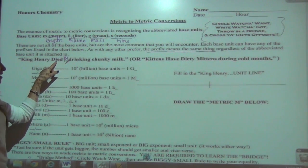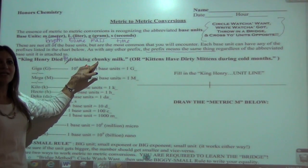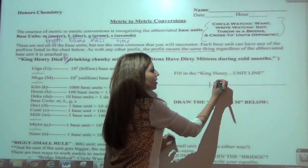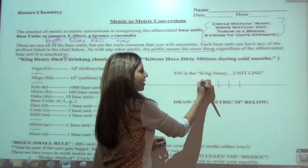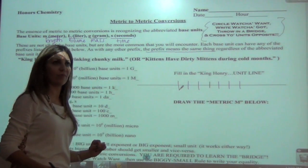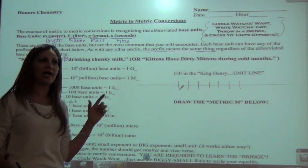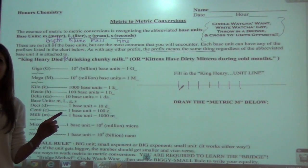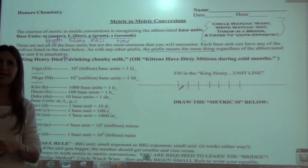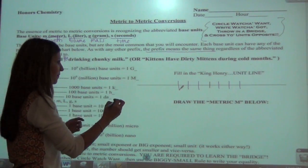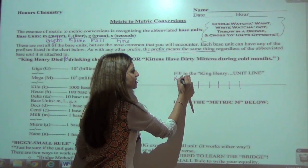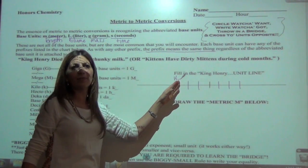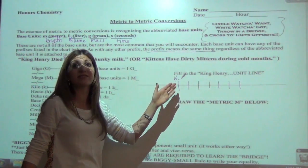The K stands for kilo, H for hecto, D for deca, then base, then D for deci, C for centi, and M for milli. We're going to make lines with one, two, three on each side and fill in our scale. King Henry Died By Drinking Chunky Milk — 'by' marks the base unit, so kilo, hecto, deca, base, deci, centi, milli.